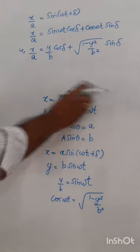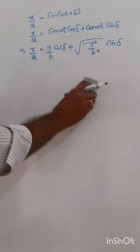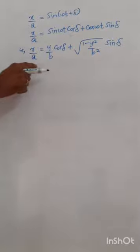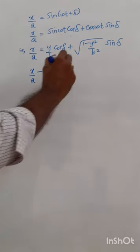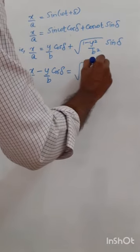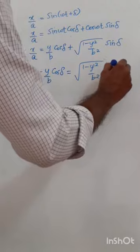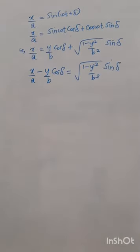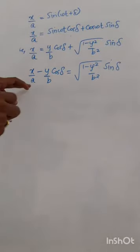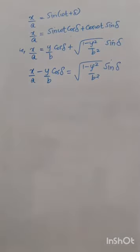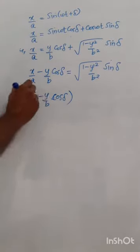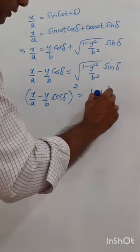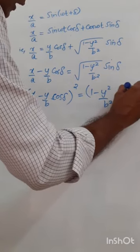Now we rearrange and simplify. The first rearrangement is to take (y/b) cos(delta) to the LHS, giving: x/a - (y/b) cos(delta) = sqrt(1 - y²/b²) sin(delta). The next step is to square the equation: [x/a - (y/b) cos(delta)]² = (1 - y²/b²) sin²(delta).